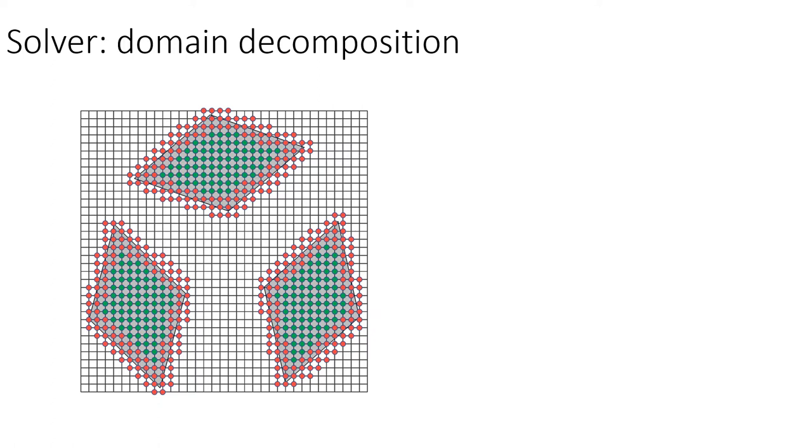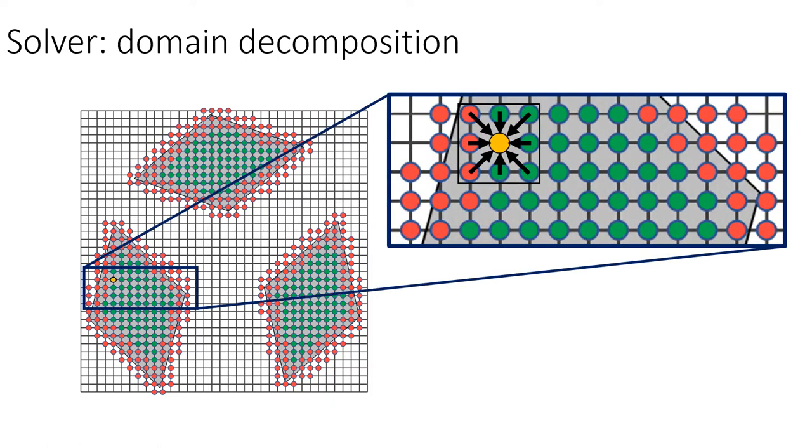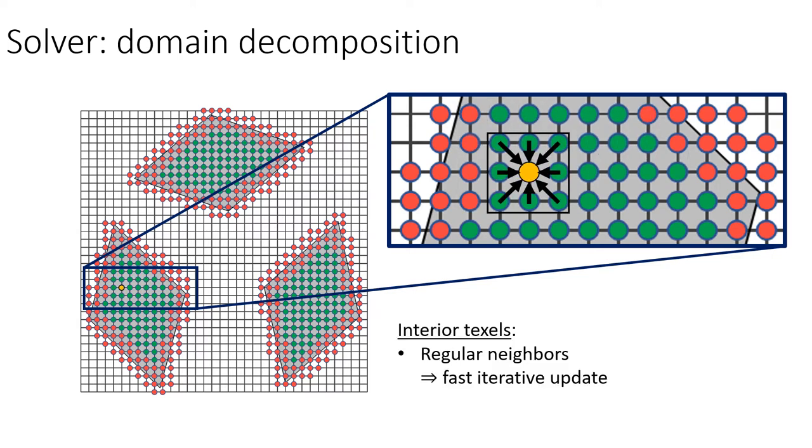To solve the gradient domain system, we use an iterative approach that updates the interior and boundary texels in different ways. For interior texels, the update is straightforward since neighbors lie within a fixed 3x3 window. This allows us to efficiently relax the interior texels in a parallel and memory-coherent manner.